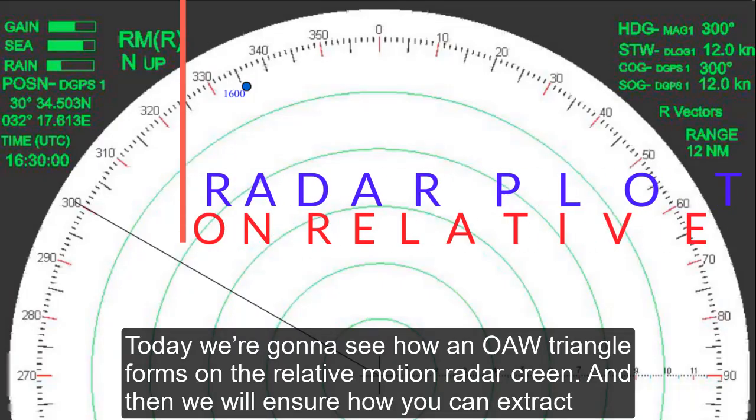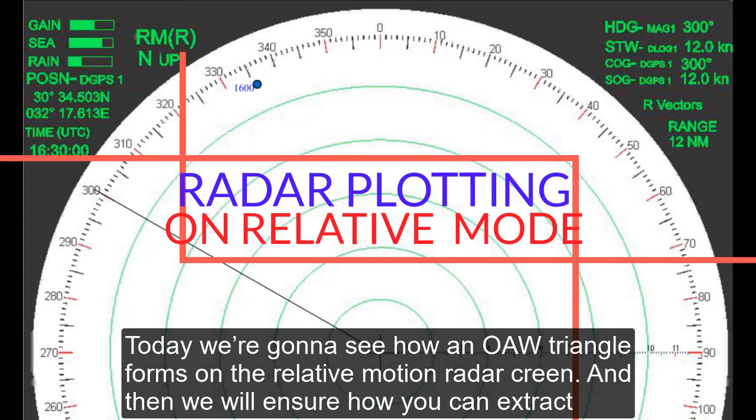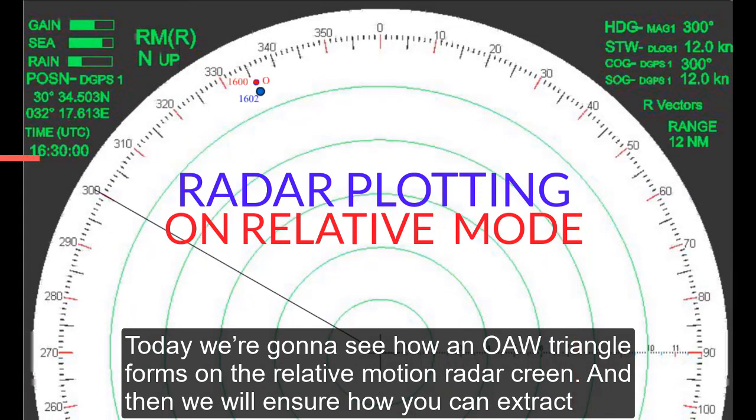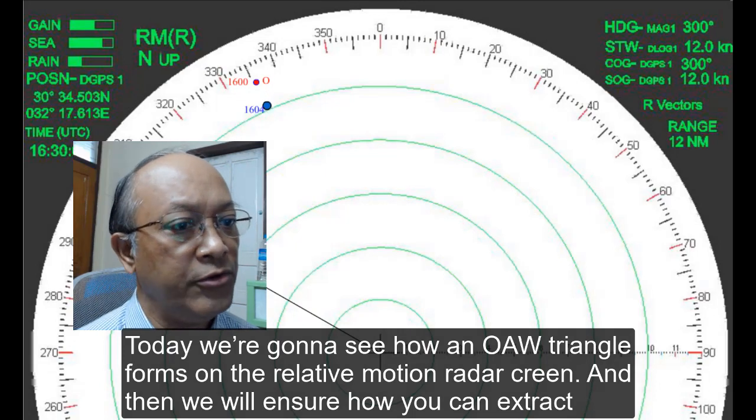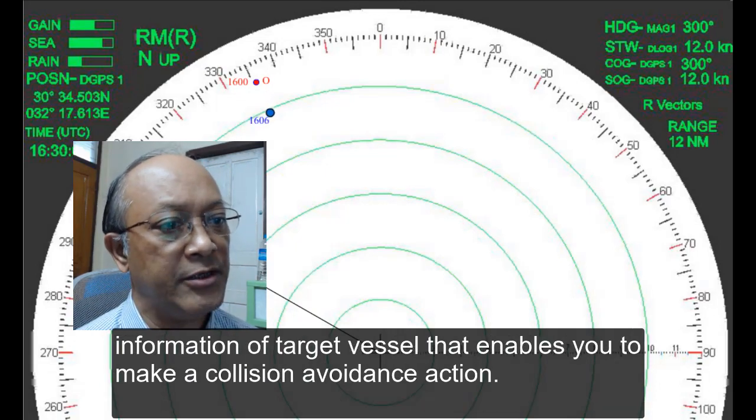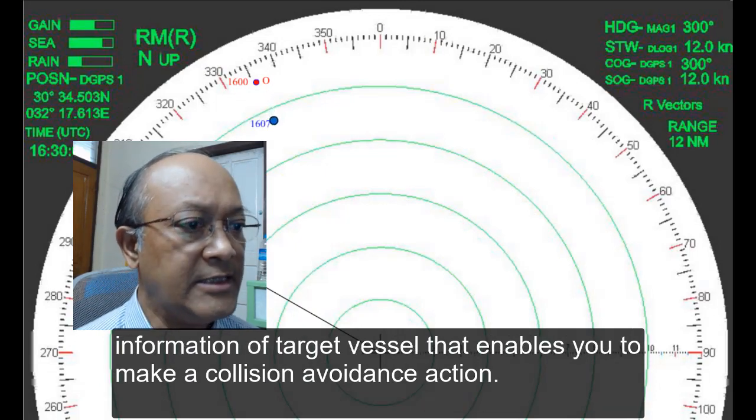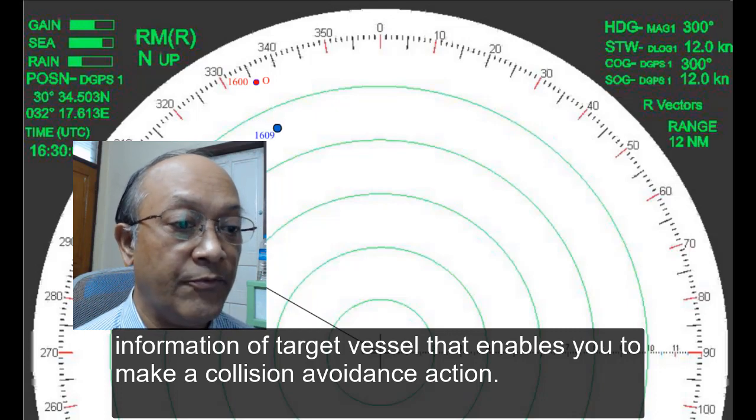Today we're going to see how an OAW triangle forms on the relative motion radar screen, and then ensure how you can extract information of target vessel that enables you to make a collision avoidance action.